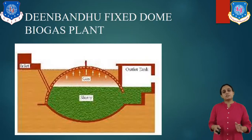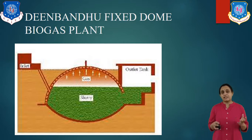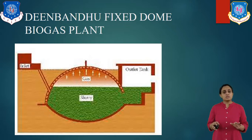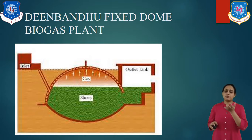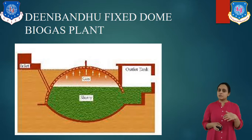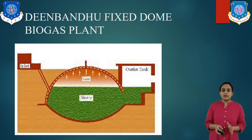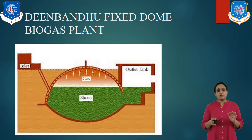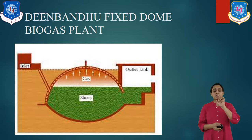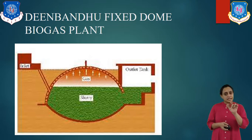Let us see the Deenubandhu fixed dome biogas plant. It is a fixed dome biogas plant, so it does not have any floating device and can be economically constructed as there is no costly floating gas holder. The cost of the floating drum is a bit higher than the fixed type. Construction, maintenance, and operation are simple and convenient, and the cost of the plant is considerably reduced. We only need one structure for both the digester and gas collector — we do not need two separate objects — hence the cost is very low.